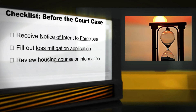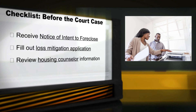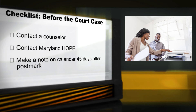As soon as your lender mails you that first packet — the one with the notice, the application and the information on housing counselors — a clock starts ticking. It's not long before the lender may file foreclosure papers with the court. Let's review the checklist of actions you may take before the lender files foreclosure papers in court: Did you receive a notice of intent to foreclose in the mail? Did you fill out the loss mitigation application and submit it? Did you keep a copy? Did you review the housing counselor information? Did you contact a counselor? Did you contact Maryland HOPE? Did you make a note on your calendar about 45 days after the postmark on the lender's packet? That could be the earliest date on which the lender may begin the court foreclosure process.